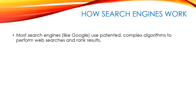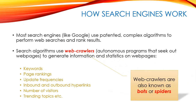The things that web crawlers look for are keywords and page rankings, update frequencies, inbound and outbound hyperlinks — which means connections to other web pages — number of people visiting it, and topics. These web crawlers are also known as bots or spiders, and these programs are out on the internet all the time gathering information for the search engines and the companies that run them.